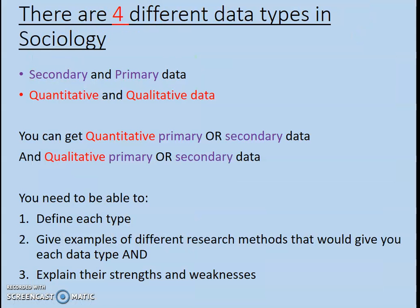There are four different types of data in sociology: secondary, primary, quantitative, and qualitative data, and you can combine these. So you can get quantitative primary or secondary data, and you can also get qualitative primary or secondary data. You need to be able to define each of these data types, give examples of research methods that produce each type, and explain their strengths and weaknesses.